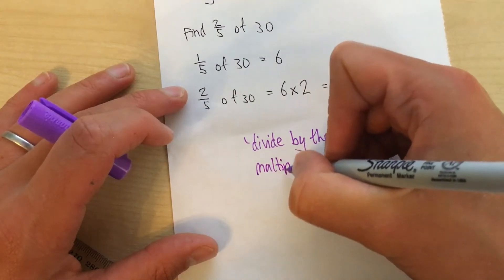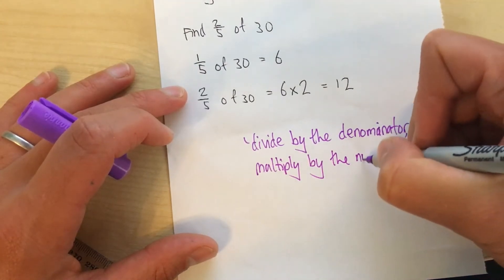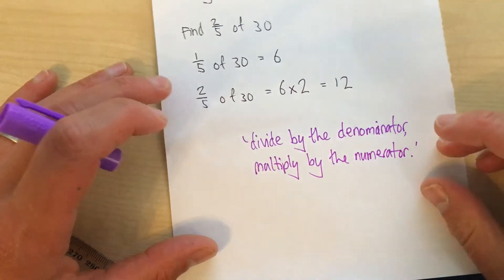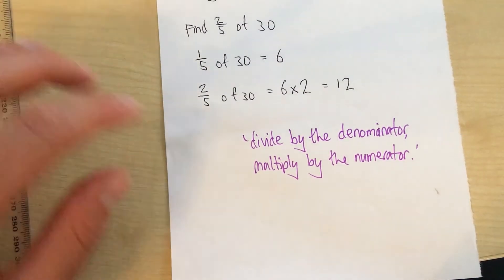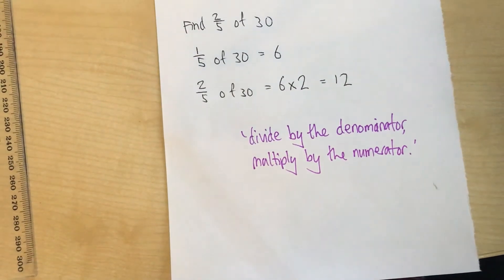Multiply by the numerator. We could multiply by the numerator first and then divide by the denominator, but we end up with bigger numbers to divide. So doing it this way around makes it more efficient. Let's have another one.